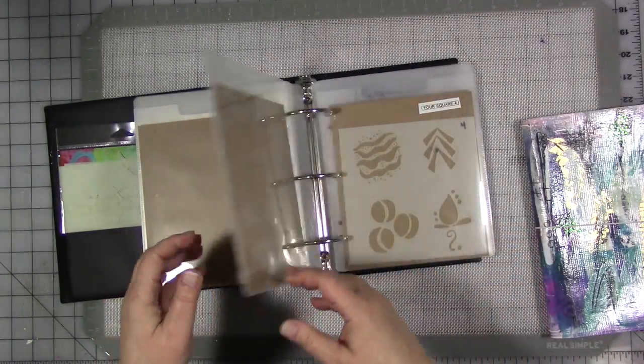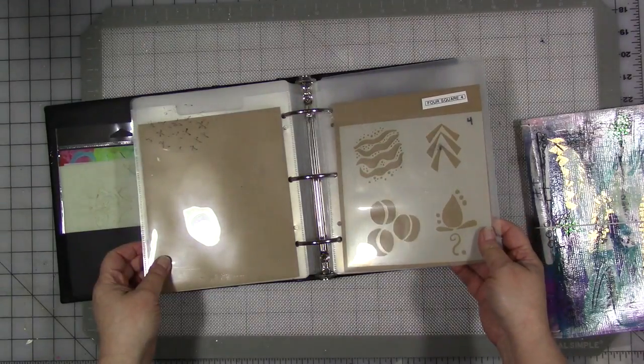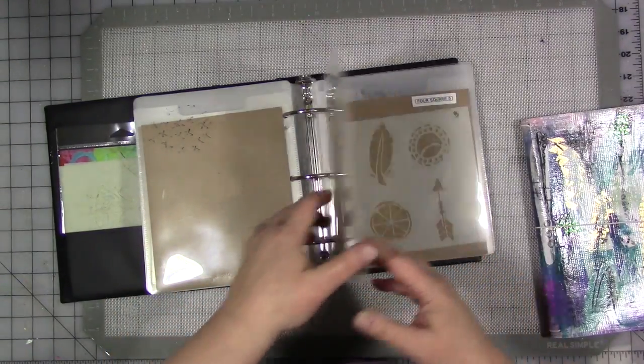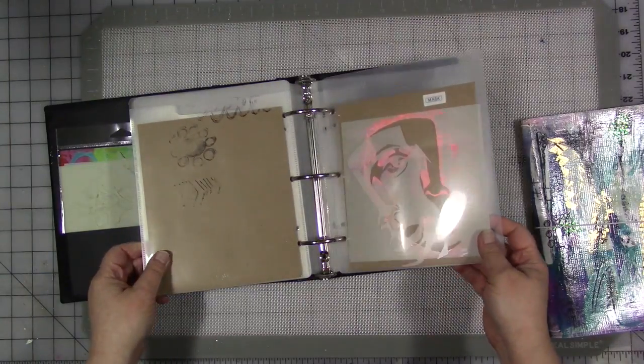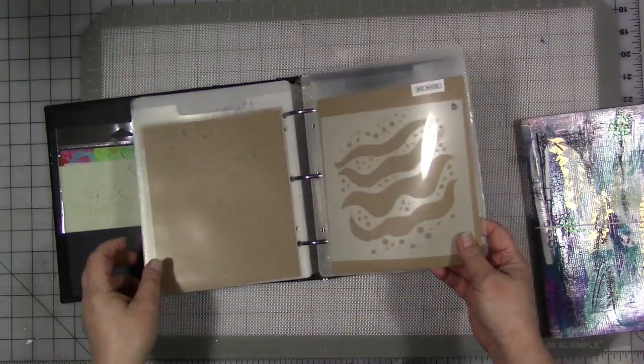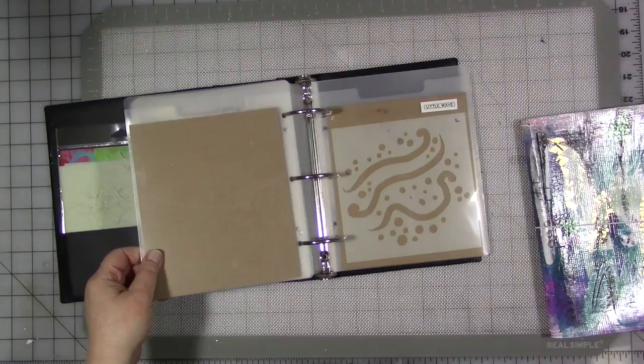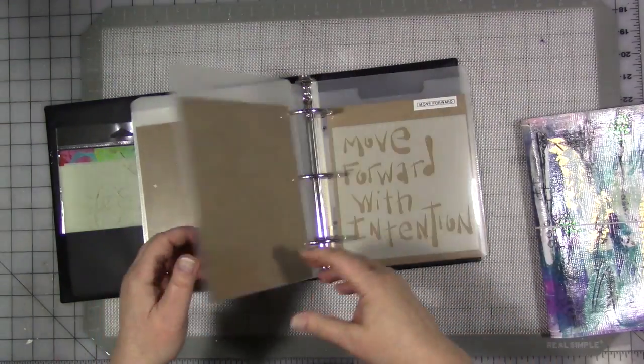If there's one in particular that you see that you like, the names are here. You should be able to find them if they're in stock. And if they're not, you can message me. You can pause the video over the one that you're looking for and message me.